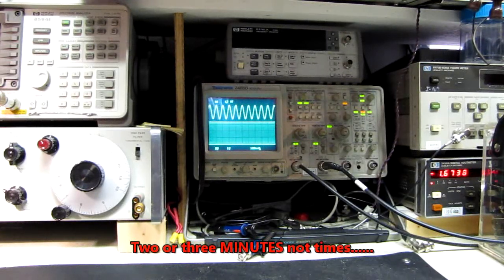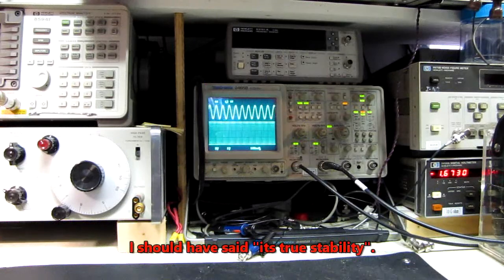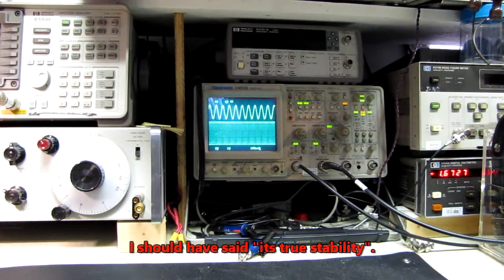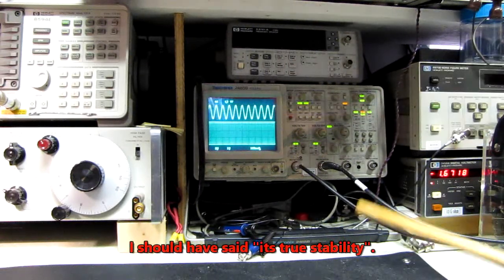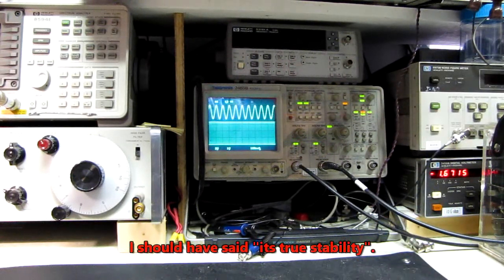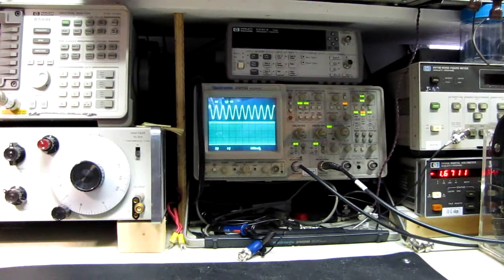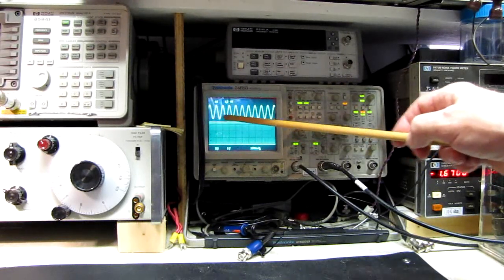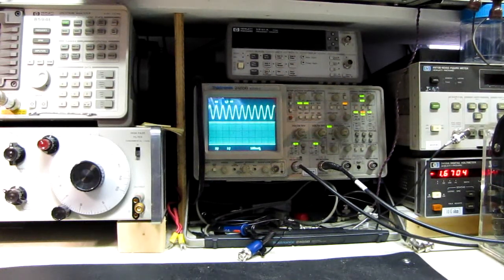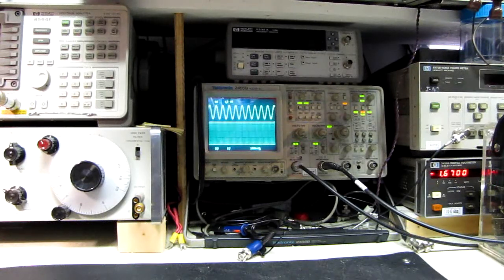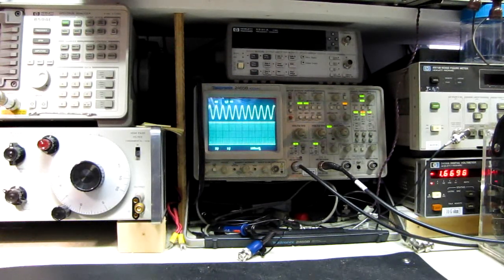And it'll do this two or three times until the rubidium warms up enough for an internal lock. Now it's going to take this thing probably half an hour or an hour to actually settle down to its true accuracy. But this is how we compared this GPS disciplined oscillator to the two Agilent oscillators.